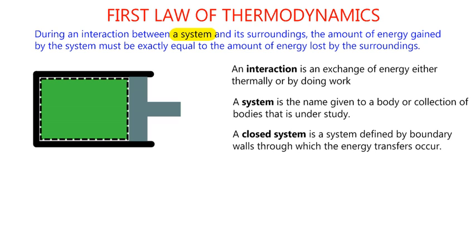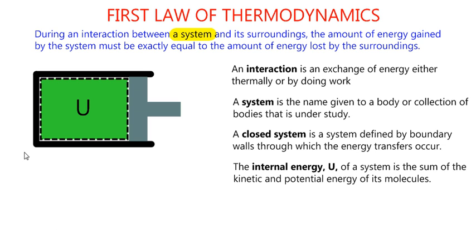A closed system is a system defined by boundary walls through which the energy transfers can take place. In this case, the system defined by the dotted lines and the green-shaped area has an internal energy, U.